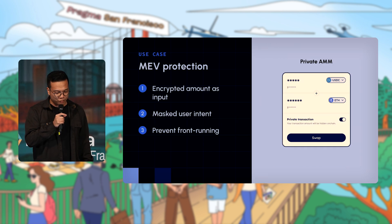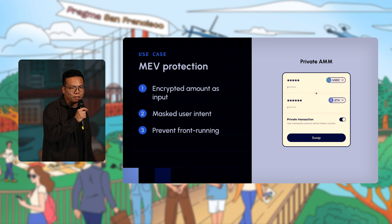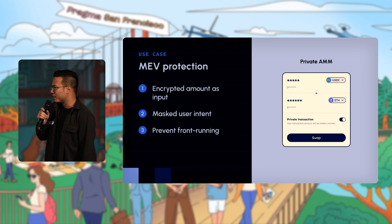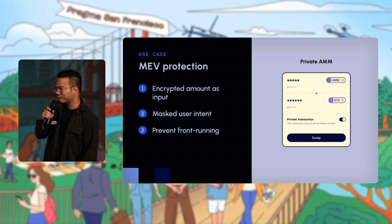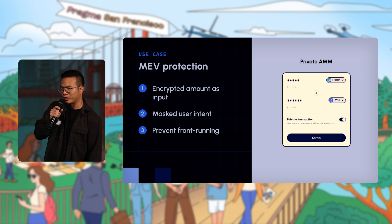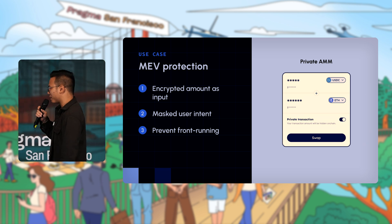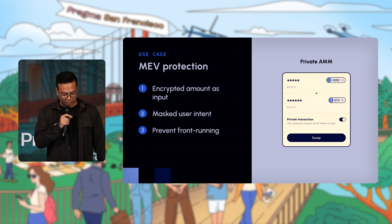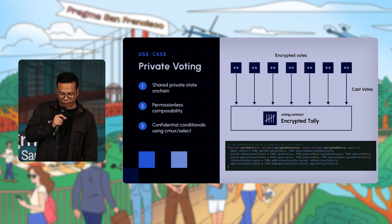Another benefit: if you think about a private AMM where you trade tokens, there is natural MEV protection because your intents are masked. The bots don't know how much you're trying to swap, and since the pools are encrypted, there's no way for them to front-run you.